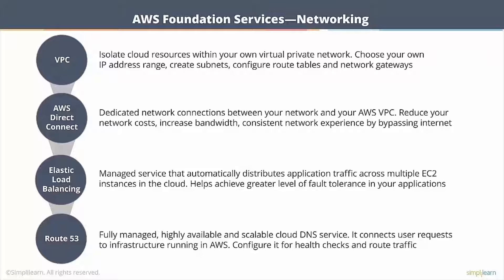AWS also has something called Route 53. This is a fully managed, highly available cloud DNS service. What it does is it basically acts like a phone directory — you put in your website address and it converts that to the IP address and brings you to your source, which could be an S3 bucket, your load balancer, or really anything.